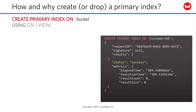To access data in a bucket using N1QL, the data must be indexed. We support a primary index for ad hoc queries against a bucket, created by cbq or the query workbench using a N1QL query. Once you've created a primary index, you can throw any query you choose against the bucket, because all fields of all documents are being indexed in a basic way. The queries won't be highly performant because it's a very global index, but once you've developed the queries you need, it's easy to create a secondary index to drop query performance into the millisecond and microsecond range.